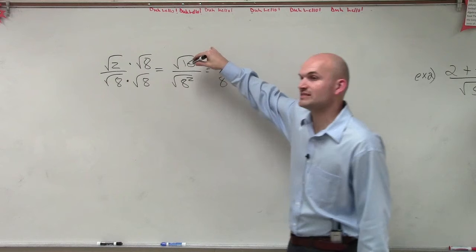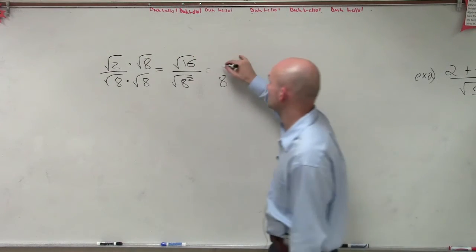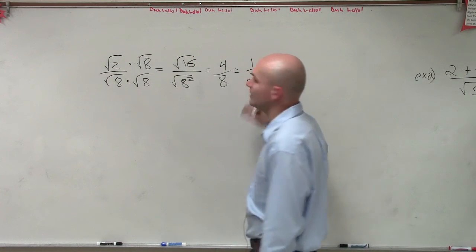So you have 8 over, and then what's the square root of 16? 4. Which that reduces down to 1 half.